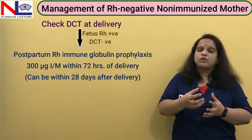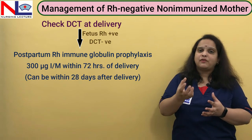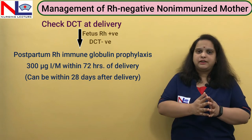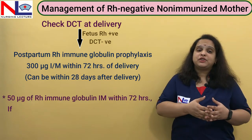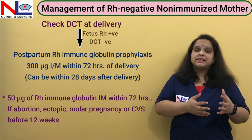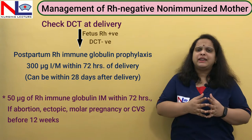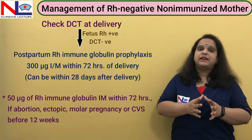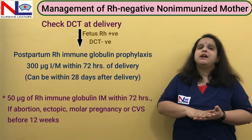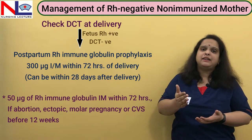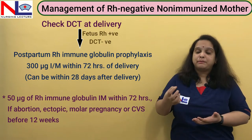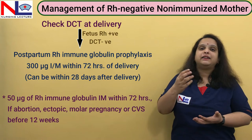If the postnatal prophylaxis was missed within 72 hours, it can still be administered within 28 days after delivery for some level of protection. If any event occurs before 12 weeks of gestation — such as abortion, molar pregnancy, or ectopic pregnancy — we give only 50 micrograms of anti-D, which is sufficient. Beyond 12 weeks, the full dose is required, depending on the amount of fetomaternal bleeding.